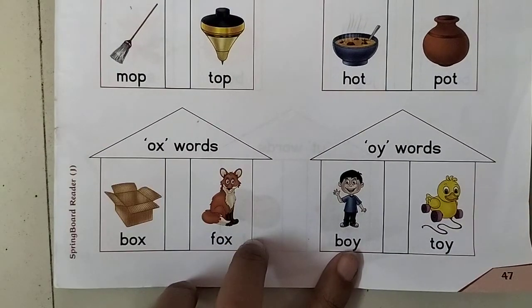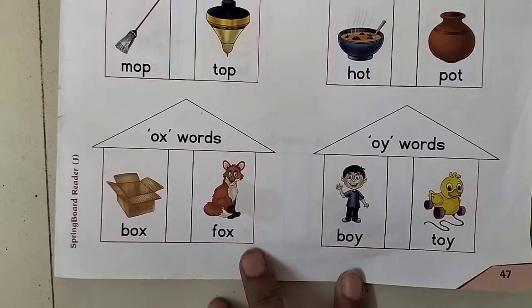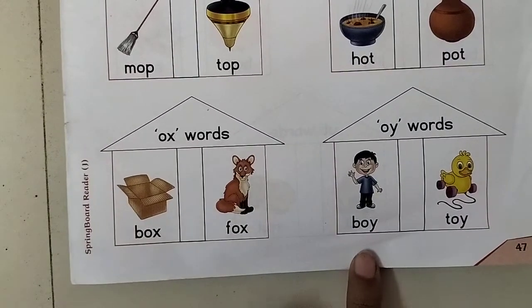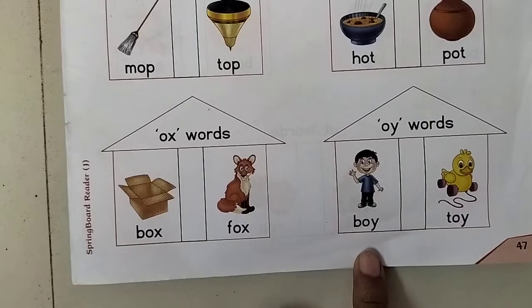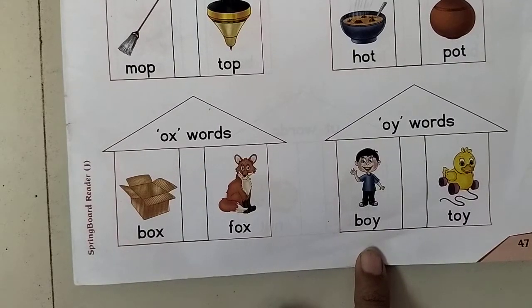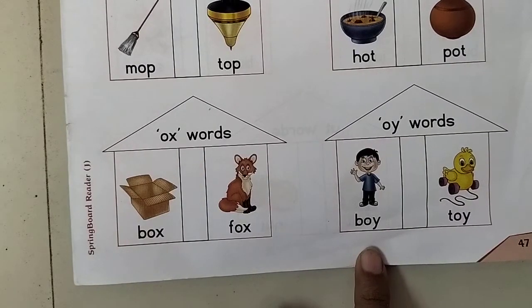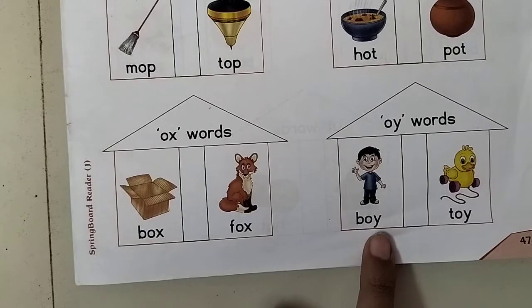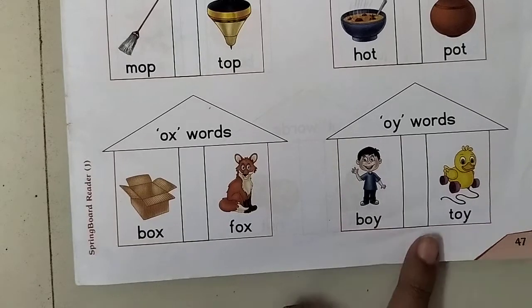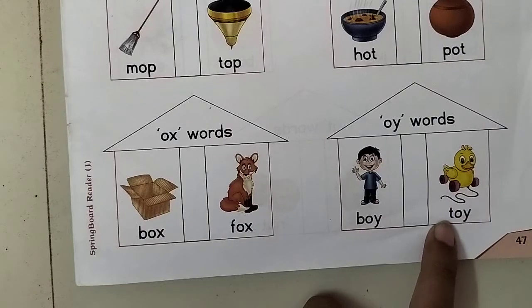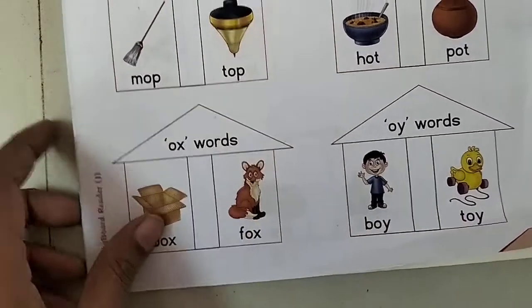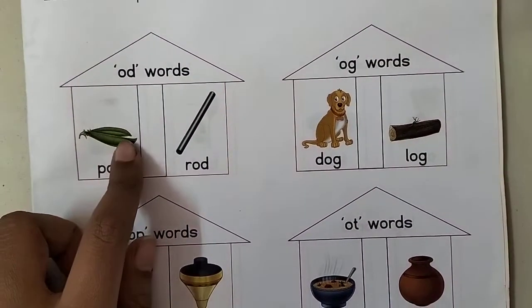O, Y words, जिसमें O, Y लगता हो। B, O, Y — Boy, यानी की लड़का। T, O, Y — Toy, यानी की खिलौने।